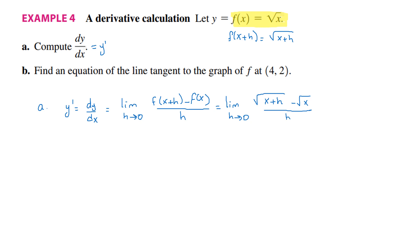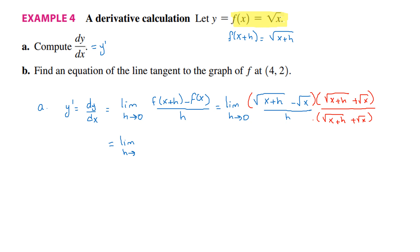Think of the conjugate, because we have radicals. The conjugate of radical x plus h minus radical x is radical x plus h plus radical x. Multiply numerator and denominator by that conjugate. Every time you multiply conjugates, the answer is the difference of squares: radical x plus h squared minus radical x squared, divided by h times radical x plus h plus radical x.